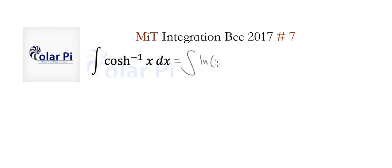To start, you should know that arc cosh x is also known as the natural log of x plus the square root of x squared minus one. We can rewrite the given integral like this.